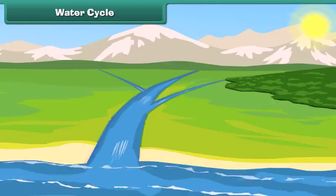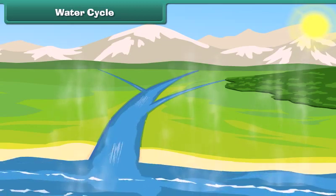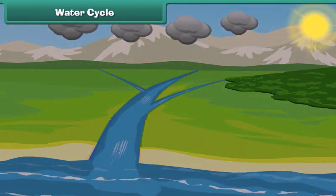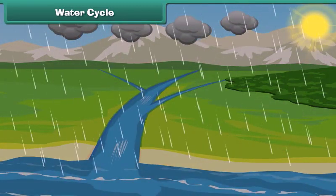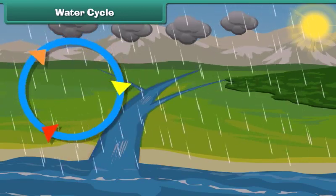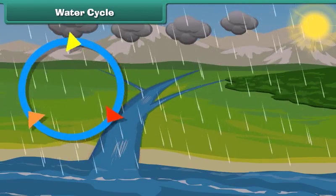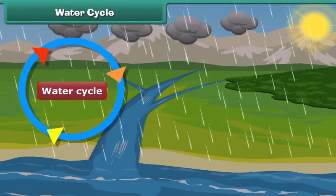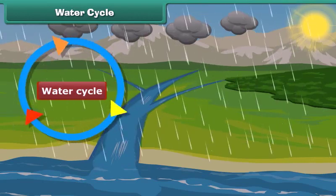Finally, the water reaches the water bodies and gets collected there. You can see water is constantly cycling from land to air and back to land again. This process is known as the water cycle. Therefore, kids, water on our earth will never come to an end.